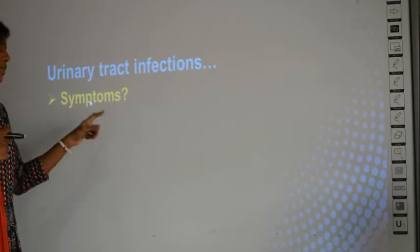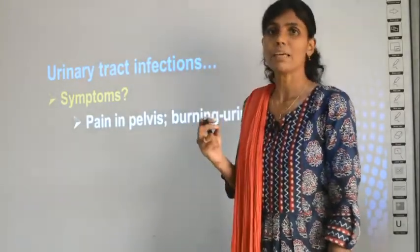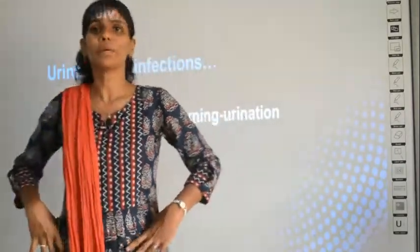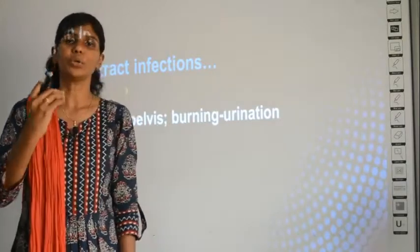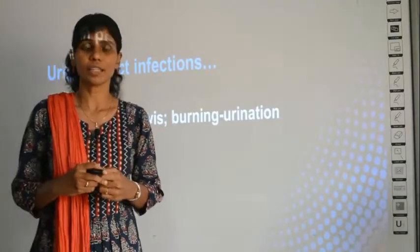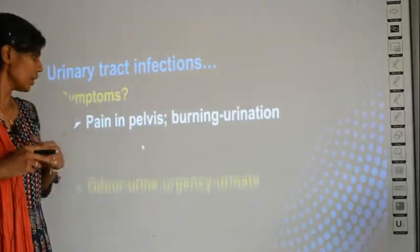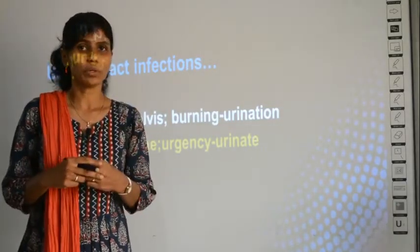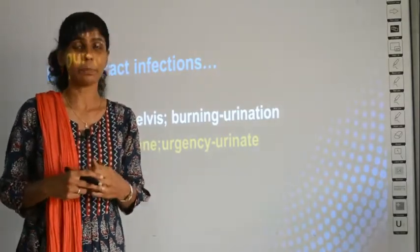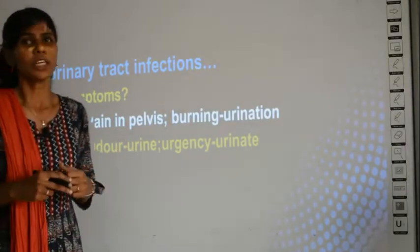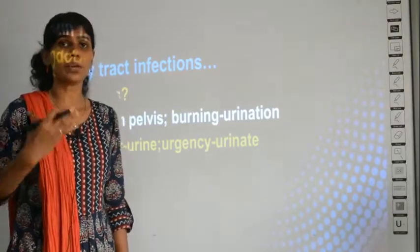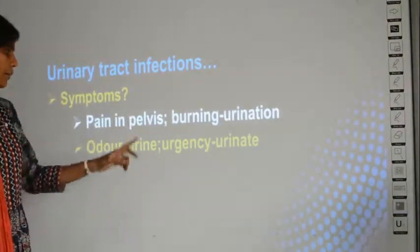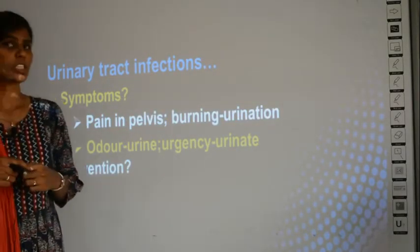The symptoms of urinary tract infection include: pain in the pelvis (the hip region), a burning sensation during urination, changes in the color and odor of urine — producing a very bad smell — and an increased urgency to urinate very frequently, with inability to hold urine for long.